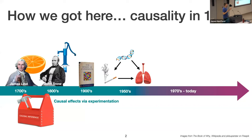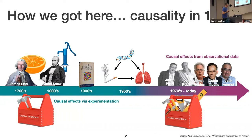A randomized control trial would obviously be deeply unethical here — you don't want to flip a coin and assign someone to smoke for the rest of their life. And even if it weren't so horrendous, smoking takes a really long time to show its effect. That led to all the work in causal inference from observational data — through people like Judea Pearl (Turing Award winner), Don Rubin, Jamie Robinson, and Josh Angrist.